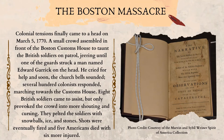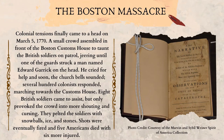The Boston Massacre. Colonial tensions finally came to a head on March 5th, 1770. A small crowd assembled in front of the Boston Customs House to taunt the British soldiers on patrol, jeering until one of the guards struck a man named Edward Garrick on the head. He cried for help, and soon the church bells sounded. Several hundred colonists responded, marching towards the customs house. Eight British soldiers came to assist, but only provoked the crowd into more shouting and cursing. They pelted the soldiers with snowballs, ice, and stones. Shots were eventually fired, and five Americans died, with six more injured.